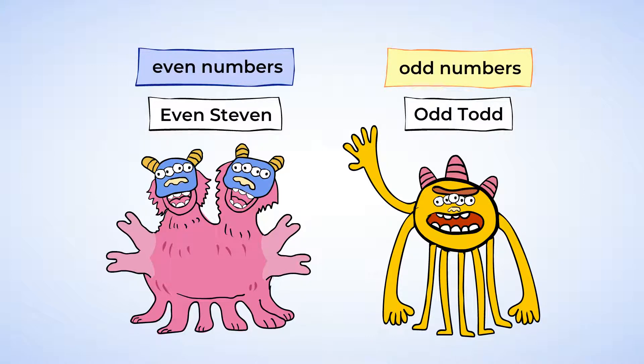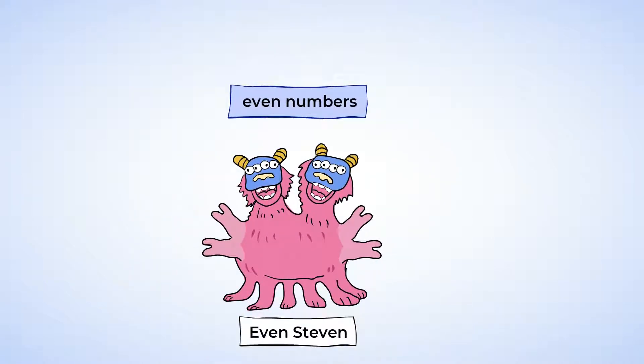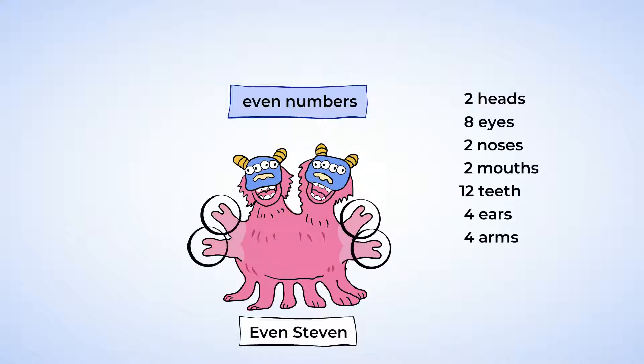First, let's take a look at Even Steven and see what you can notice. Let's look at his body. He has two heads, eight eyes, two noses, two mouths, 12 teeth, four ears, four arms, eight fingers, and six legs.